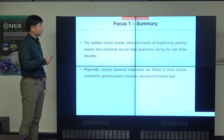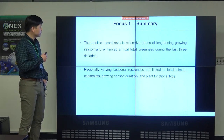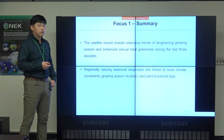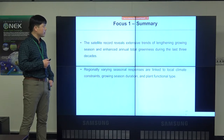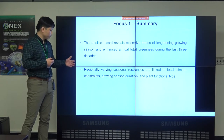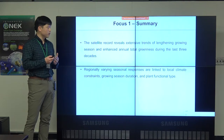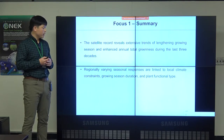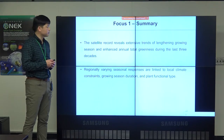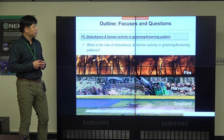In summary for focus one, from this work we see that satellite records show an extended trend of growing season length and enhanced annual total greenness during the last three decades. We also see that regionally varied seasonal responses are linked to local climate constraints, growing season length, and plant functional type.